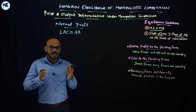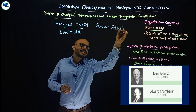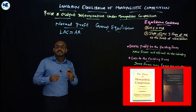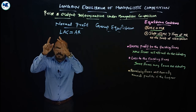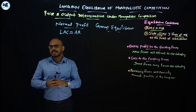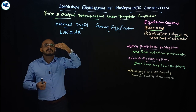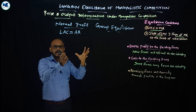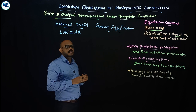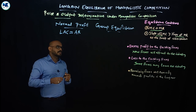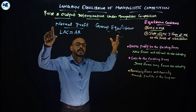Edward Chamberlin introduced the concept of group equilibrium. In monopolistic competition, Chamberlin used the term 'group' instead of 'industry.' A firm is an individual seller, and all such individual firms form the group. We need to discuss how monopolistic competition can earn only normal profit in the long period.